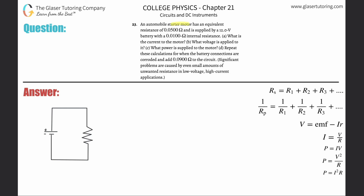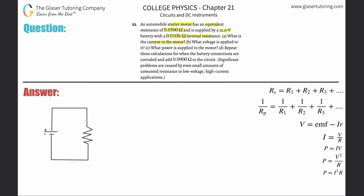Problem 23: An automobile starter motor has an equivalent resistance of 0.05 ohms and is supplied by a 12-volt battery with a 0.01 ohm internal resistance. Let's write down what we know. Be careful with the wording — the equivalent resistance refers specifically to the starter motor's resistance, which is 0.05 ohms.